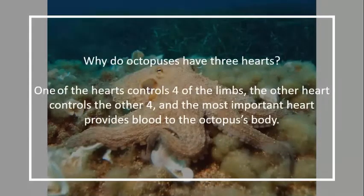Why do octopuses have three hearts? One of the hearts controls blood flow to the limbs, another heart controls the other four limbs, and the most important heart provides blood to the octopus's body.